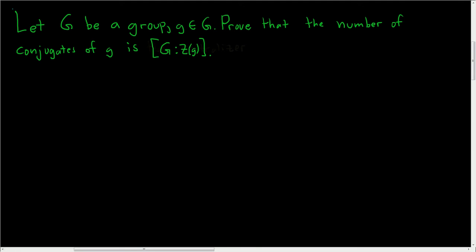Let G be a group and g ∈ G. Prove that the number of conjugates of g is equal to the index of the centralizer of g in G.